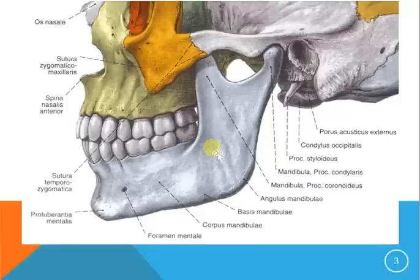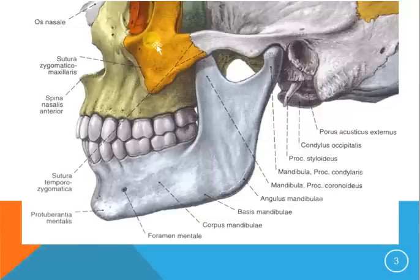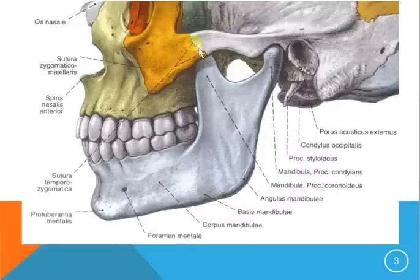This is the lateral side of the maxilla. Here we have the nasal cavity and a very important landmark, which is the spina nasalis anterior. This is the processus zygomaticus of the maxilla, which joins with the os zygomaticum or the zygomatic bone. In this view I'm also going to show you an important landmark: the zygomatic arc, made from the temporal process of the zygomatic bone and the zygomatic process of the temporal bone.